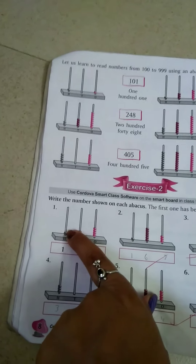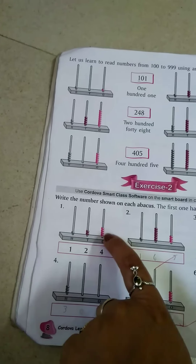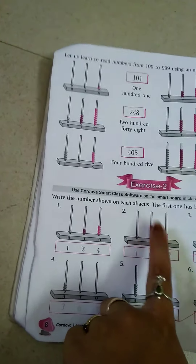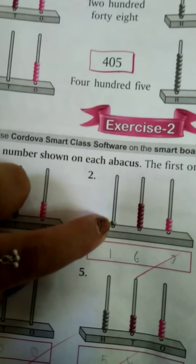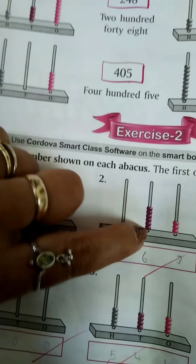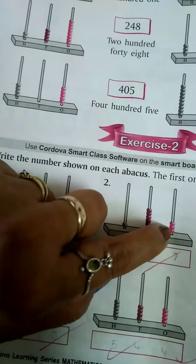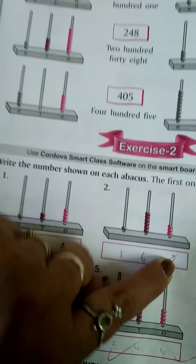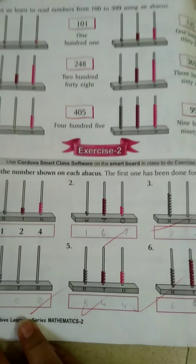Here are some exercises where you have to count the beads and write the number. Here 1 bead is at the place of 100s, so we write 1; 2 beads at the place of 10s, so we write 2; and 4 beads at the place of 1s, so we write 4. For the second one, 1 bead at 100s, 6 beads at 10s, and 3 beads at 1s.